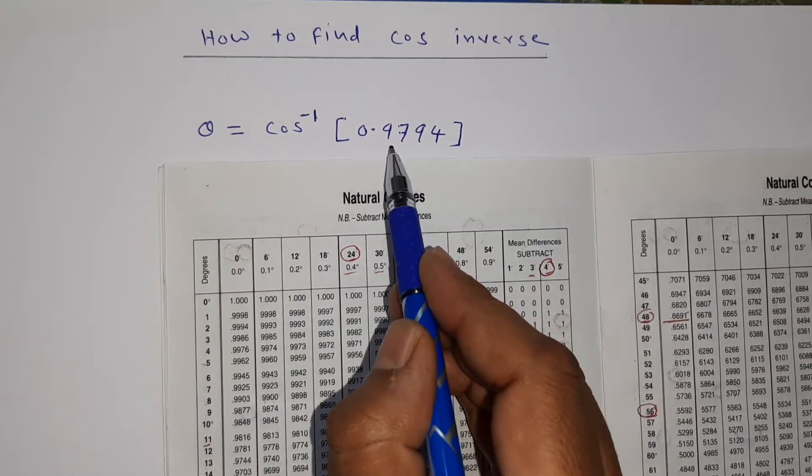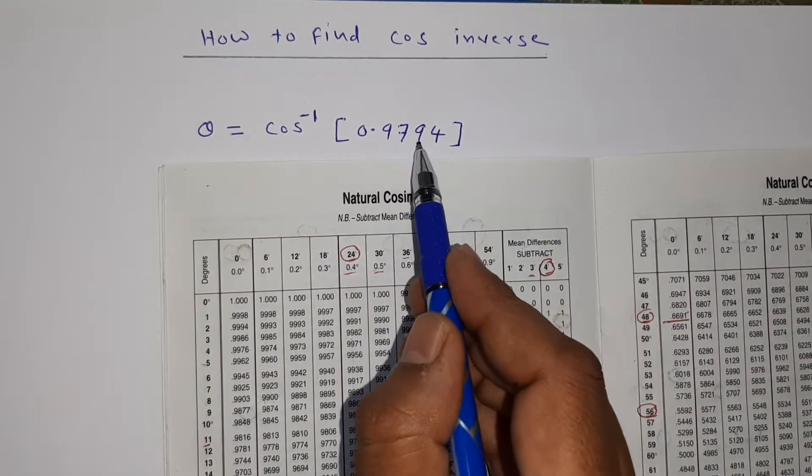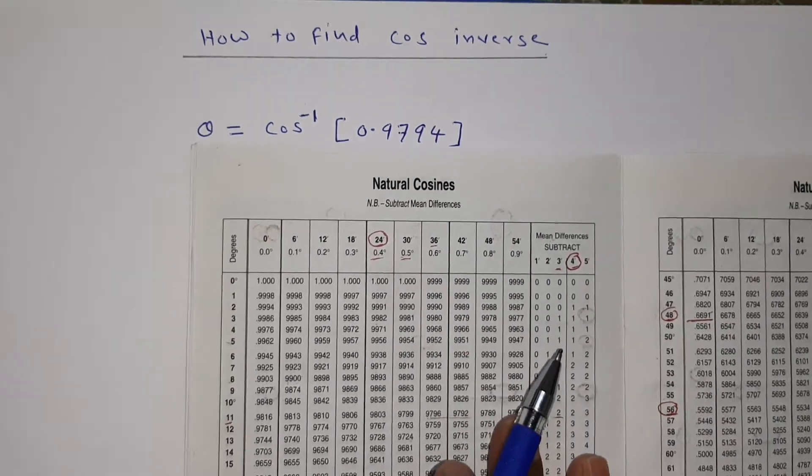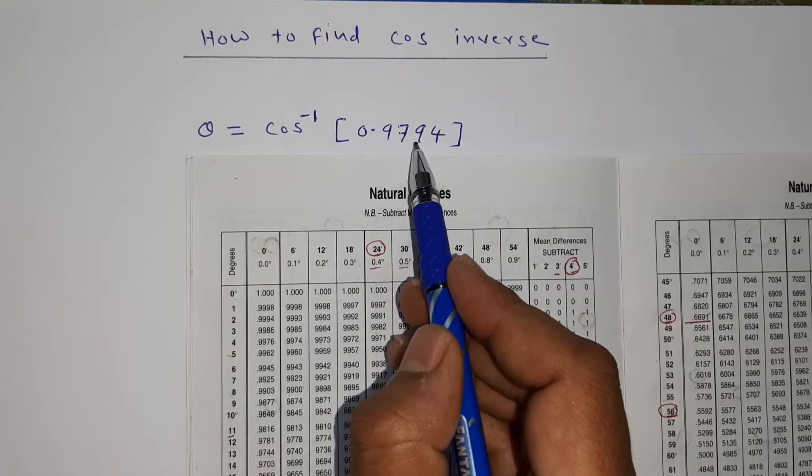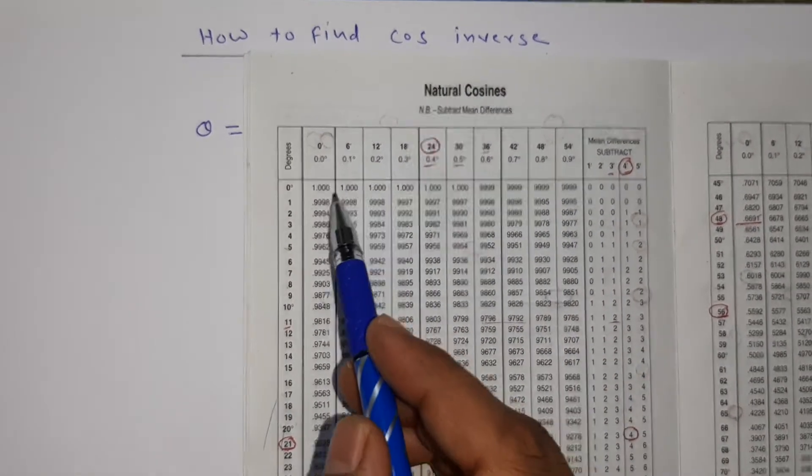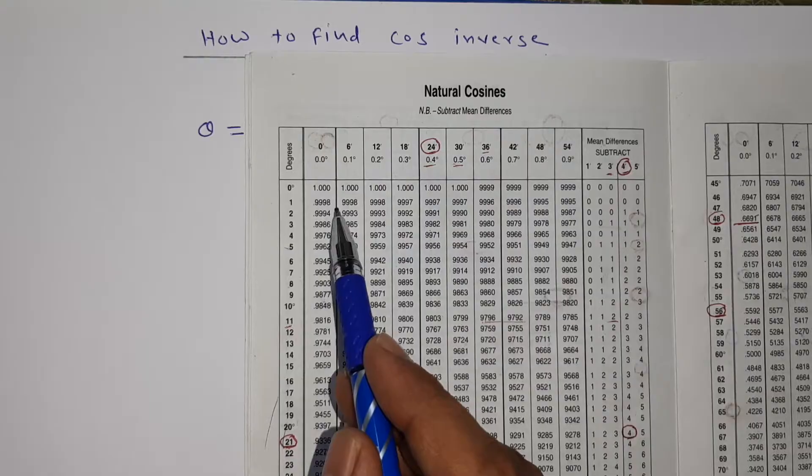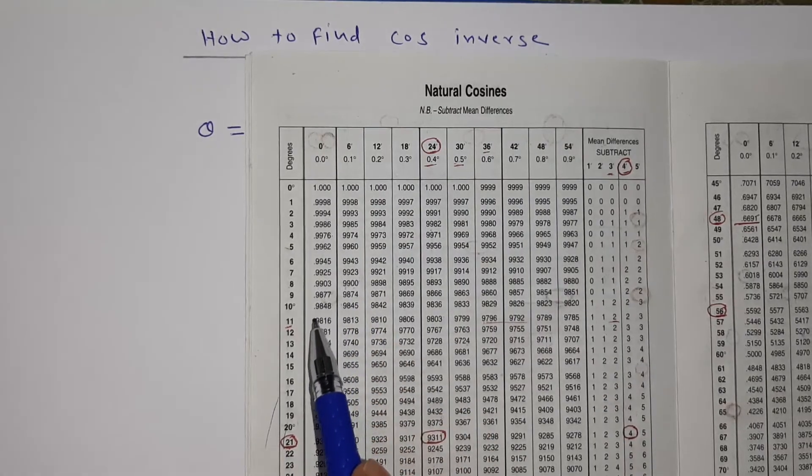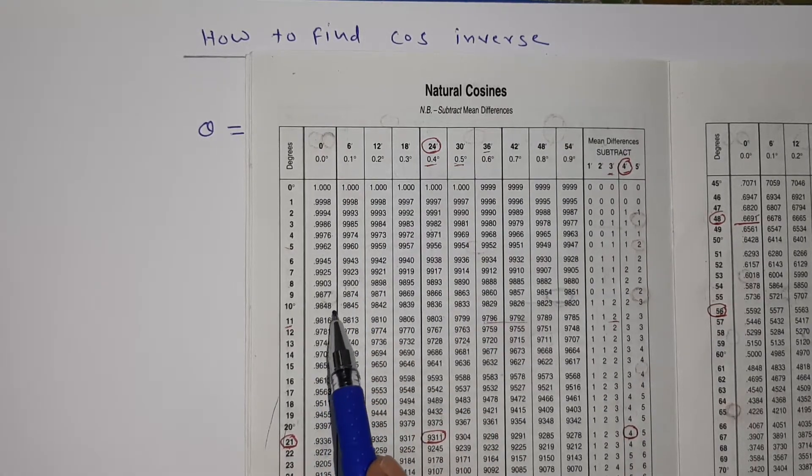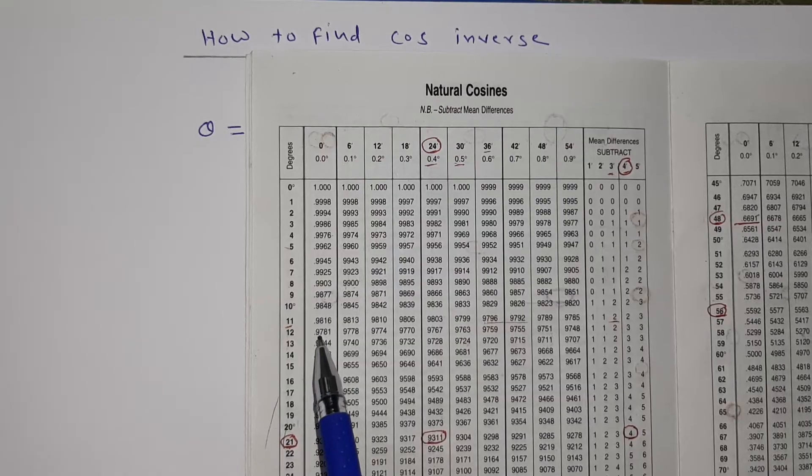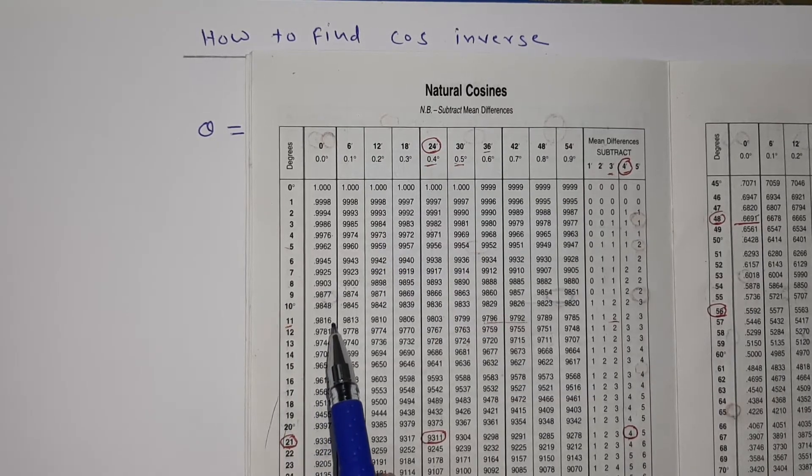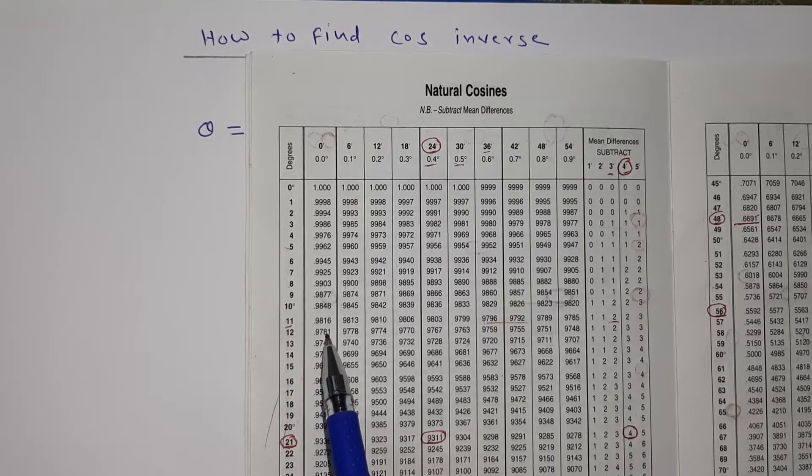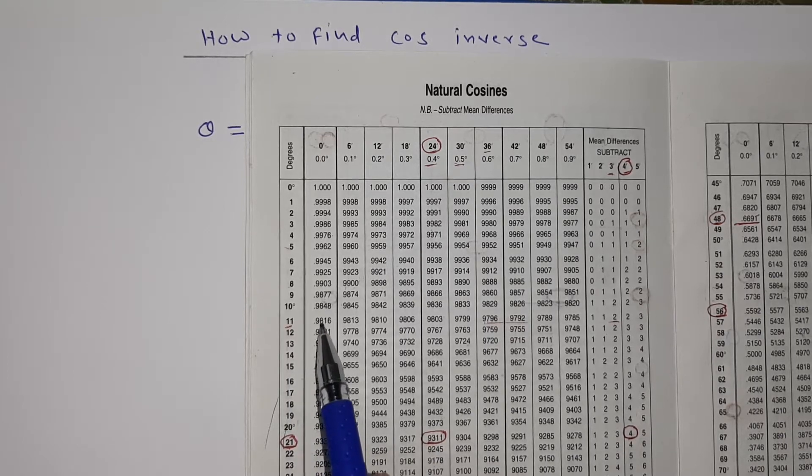Now we have to see the exact location of 9794. So in the log book you search for the value near to 9794. If I see here it is 9998, 97... You are looking for 97. It is 9848, 9816, 9781. So in 11 degrees I am getting 9816, and in 12 degrees I'm getting 9781.